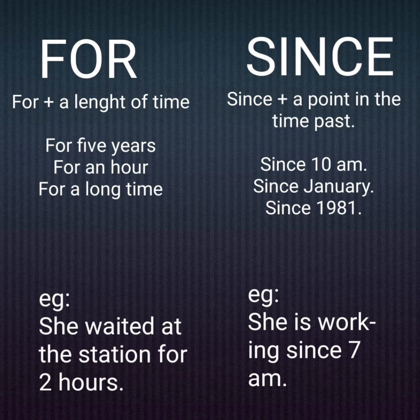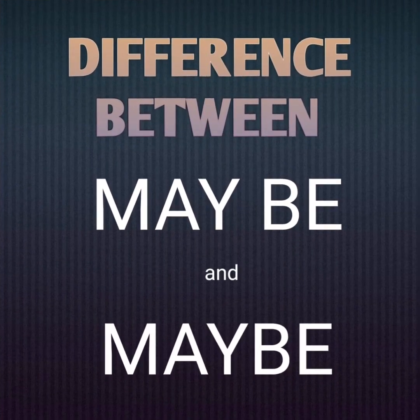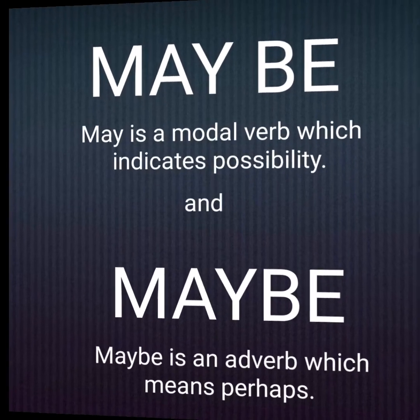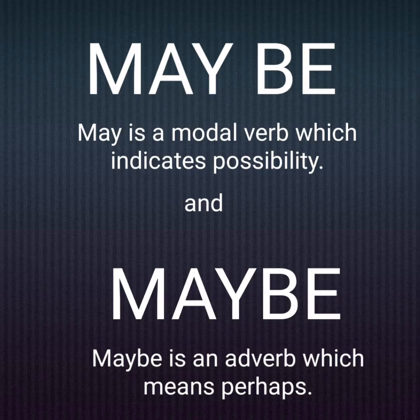The next set is the difference between 'may be' and 'maybe'. You can understand the difference in how both of them are written. 'May be' — here 'may' is a modal verb which indicates possibility. 'Maybe' is an adverb which means 'perhaps'. So one is a verb form and one is an adverb.